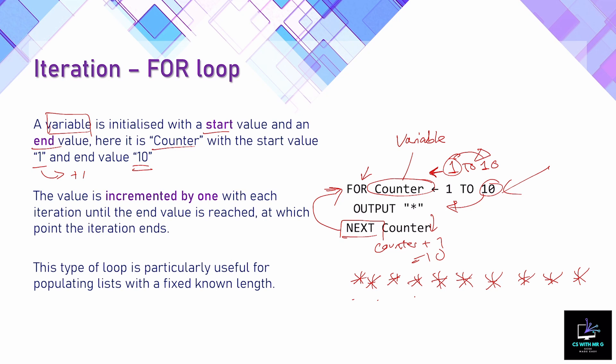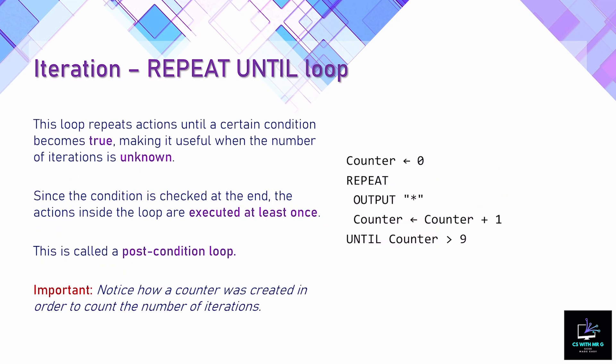When counter finally equals 10, the for loop comes to a halt and the operation is complete. The for loop is best used when we know how many times we need to loop. It's particularly useful when populating a list with a fixed known length — for example, a class of 30 students where we run the for loop 30 times to put 30 student names into a list.